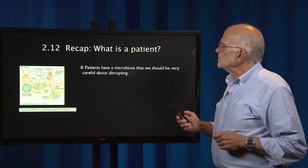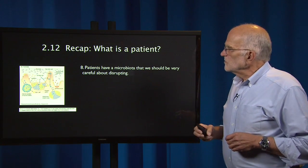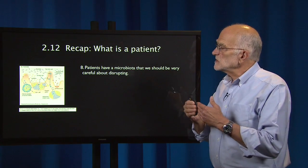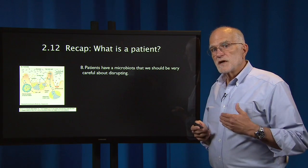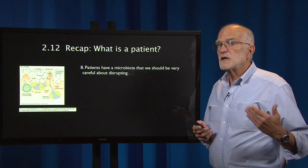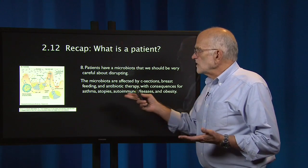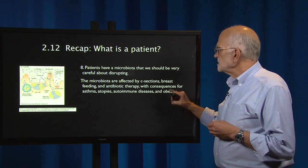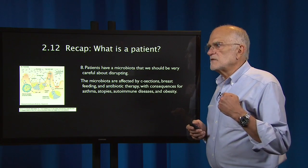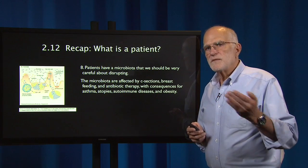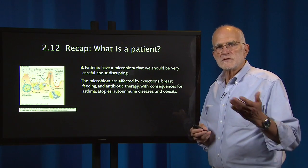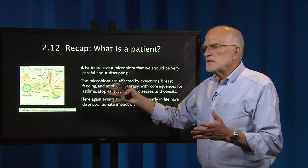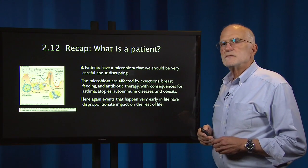If we also look into the microbiota, we need to be very careful about disrupting it, because of the initial crosstalk and then continuing crosstalk between the immune system and the microbiota — both in the gut, in the skin epithelium, and in the lung epithelium, and elsewhere. The microbiota are affected by C-sections, breastfeeding, and antibiotic therapy, and that has consequences for asthma, atopy, autoimmune diseases, and obesity. Large antibiotic treatments that pretty much wipe out the intestinal microbiota open up the possibility of a C. difficile infection, which can kill people. So here again, events happening very early in life, when the gut is initially colonized, have disproportionate impact on the rest of life.